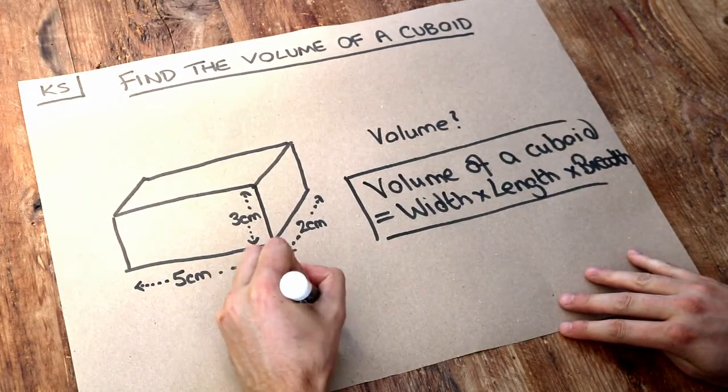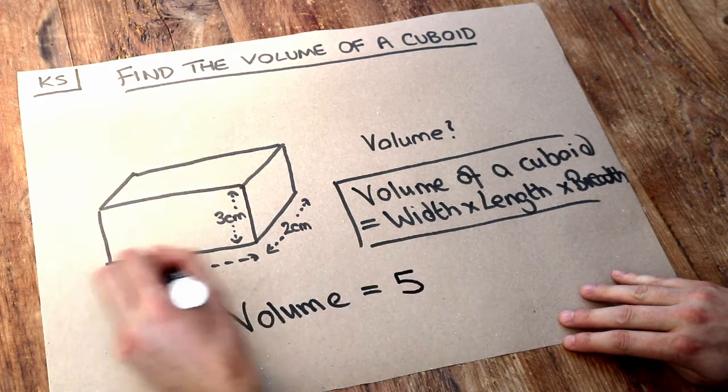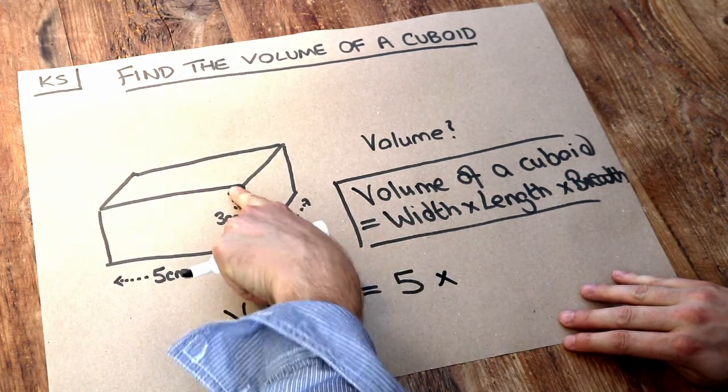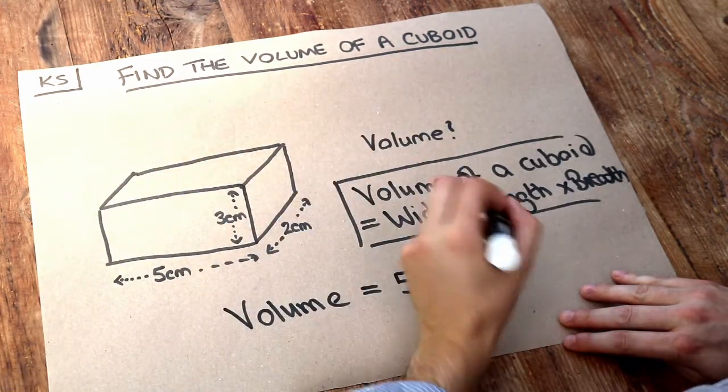So the volume here of this cuboid is just going to be the 5, that's the length of that rectangle at the front, multiplied by the width of that rectangle at the front and then multiply by that breadth, how far it's going inwards like that.